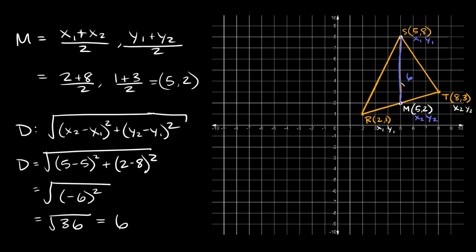We want to move two-thirds of the way down, so we find two-thirds of 6, which equals 4. So the centroid is four units down from S. The x-coordinate of S and M are the same — they both lie along x = 5, so the centroid also lies along x = 5. For the y-coordinate, our starting point S has y = 8, and we move four units down: 8 − 4 = 4. We can confirm this on the graph — move over 5 and up 4 — and we get the exact same point. The centroid is at (5, 4).